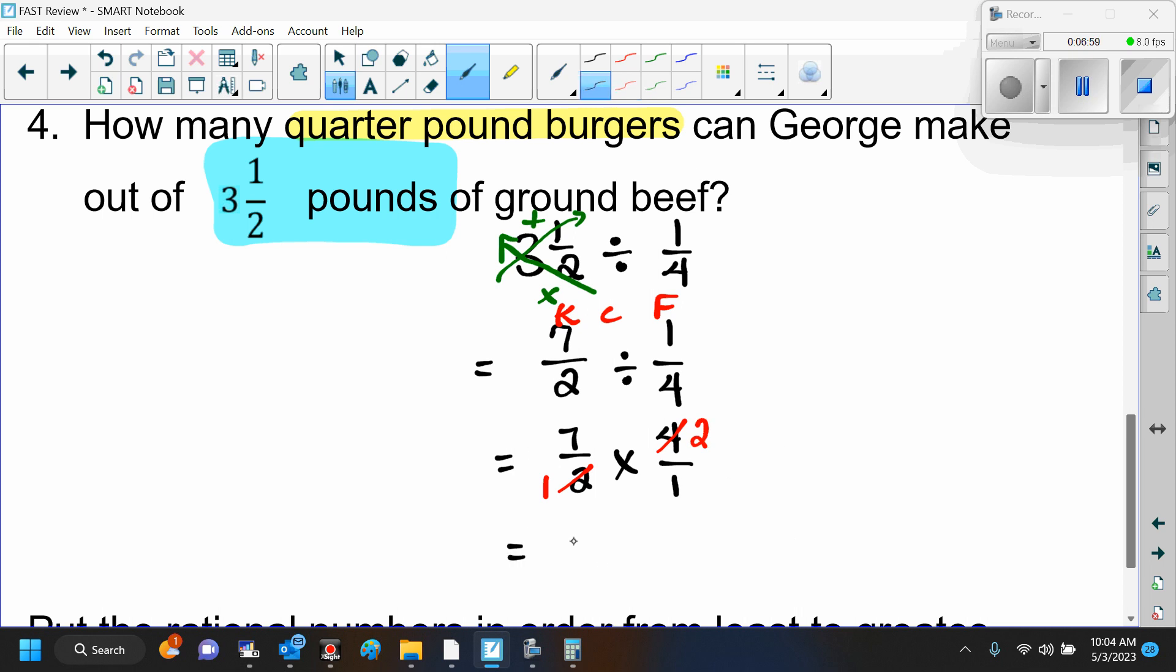So 7 times 2 over 1 times 1. Do I have to put the over 1? No, this is just 14. 14 what? Quarter pound burgers, right? So this is 14 burgers. Very good.